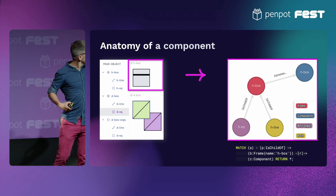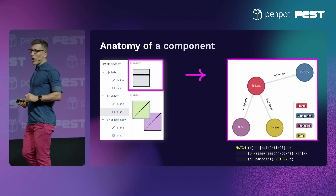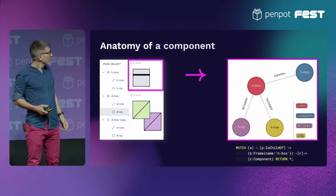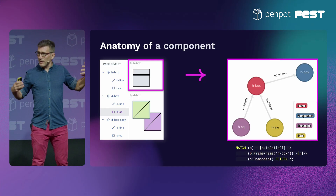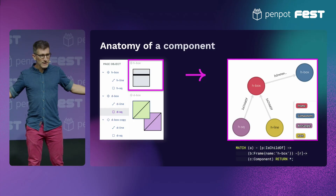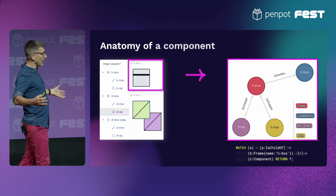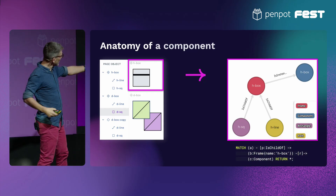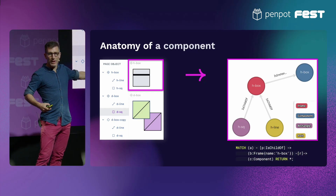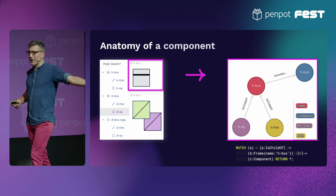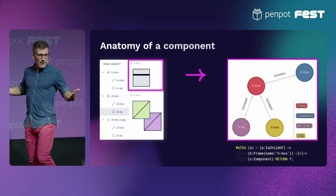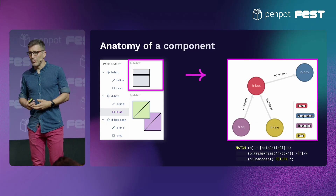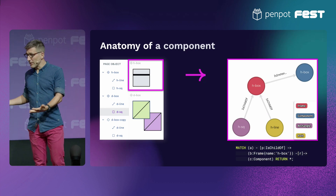That invisible thing is the component object, top right. And by the way, this is something we can produce and store in a graph database, so we can query these representations with incantations such as what you see below — which is nothing else than a query on a graph, similar to what people do with relational databases when they use SQL.